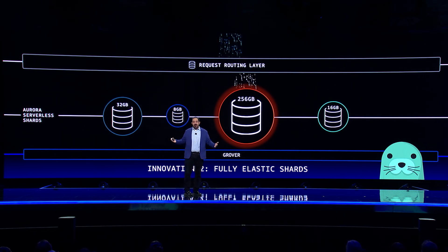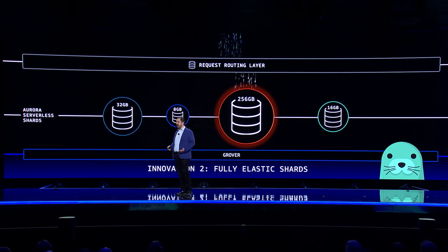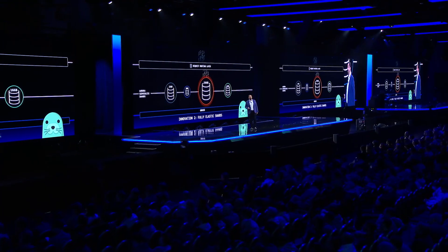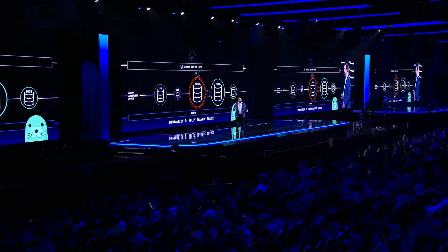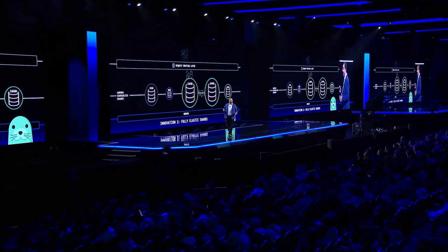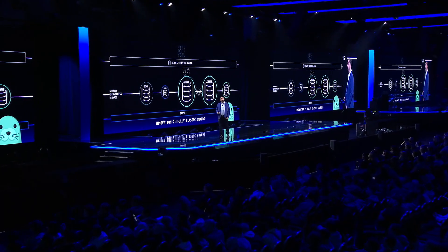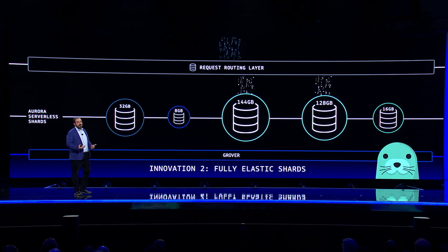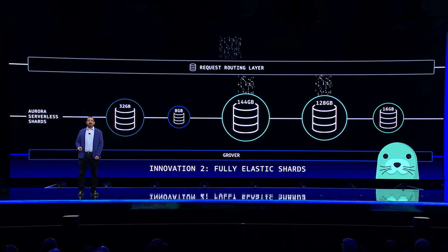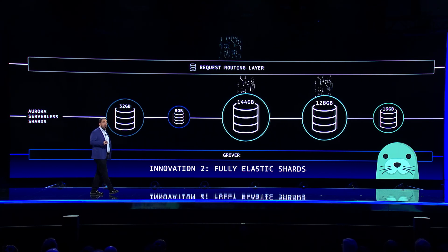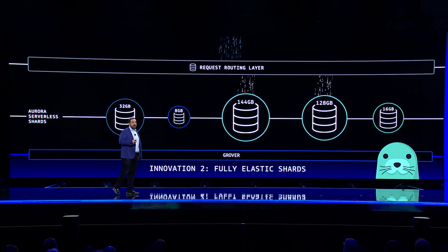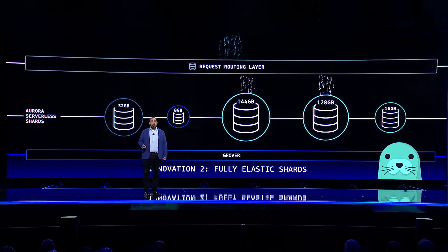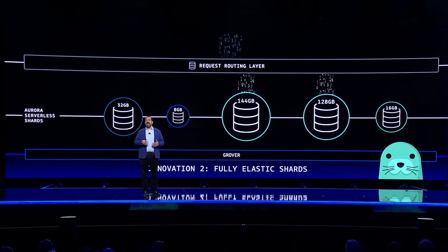What happens when we get to the largest database that we can support on a Caspian server? We've been here before. Fortunately, we have a better option than with a non-sharded database — we can split our shard into two new shards. This is easy to do because Grover makes it easy for us to clone our database and repartition. And once created, we can use our router fleet to easily and transparently update the routing layer without the database clients seeing any change at all.